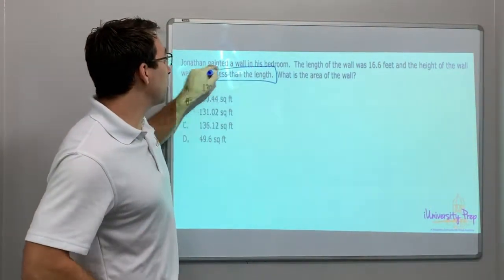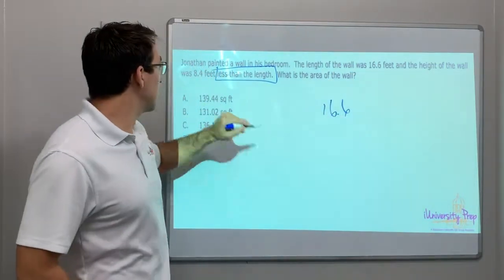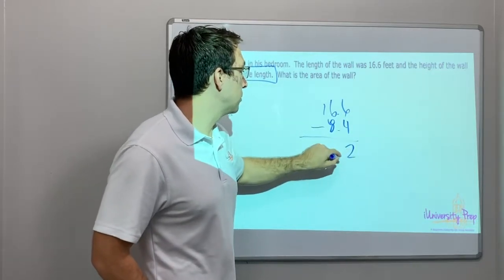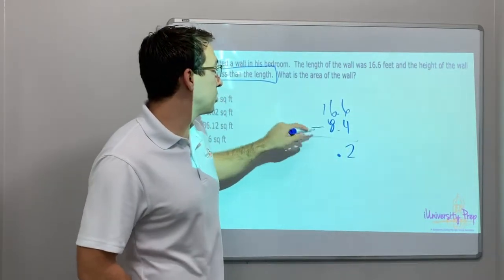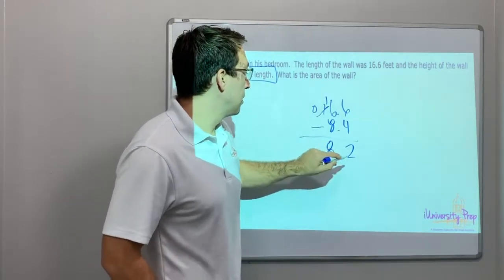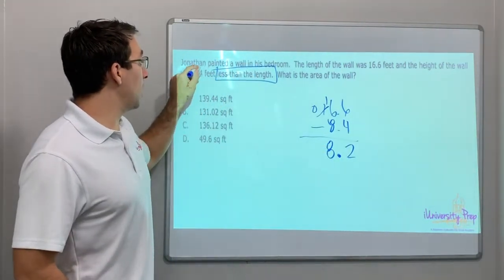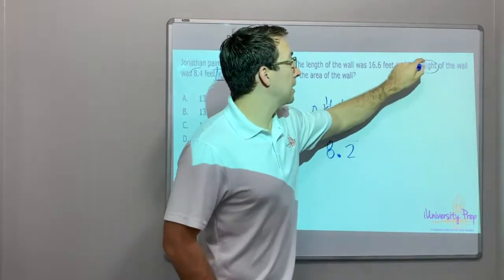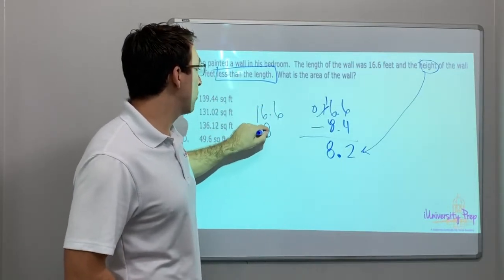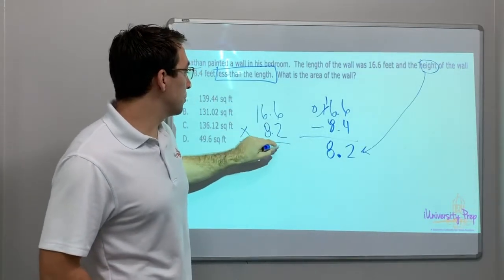This is a multi-step problem. The height is less than, so we're going to subtract: 16.6 minus 8.4. Line up our decimals — 6 minus 4 is 2, borrow, 16 minus 8 is 8. So the height is 8.2 feet.